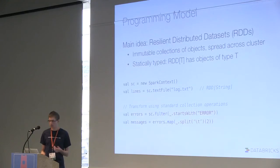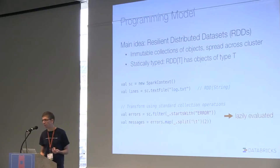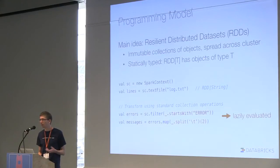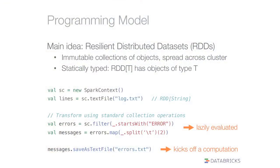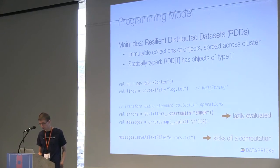One interesting thing is these derived data sets from transformations are lazily evaluated — we wait until we see everything you do, then come up with an efficient plan to execute all of them. Finally, you can do output operations called actions, such as saving as a file, which kicks off a computation and deals with the lazily evaluated stuff. If you've worked with lazy collections or views in Scala, you've probably seen a bunch of this.